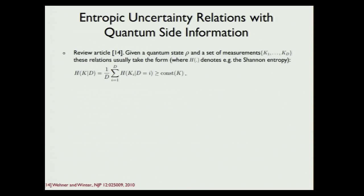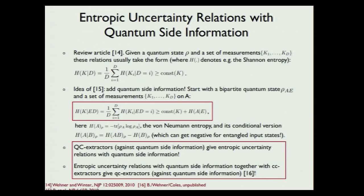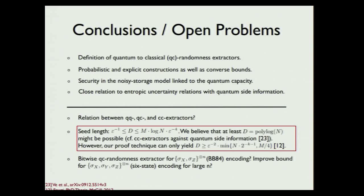Just to point out: these QC extractors are very closely related to entropic uncertainty relations with quantum side information — if you have one, you can get the other, and vice versa. In conclusion, the big open problem is really to understand what the optimal seed size would be. There is an interesting series of work on classical extractors against quantum side information about getting a short seed.